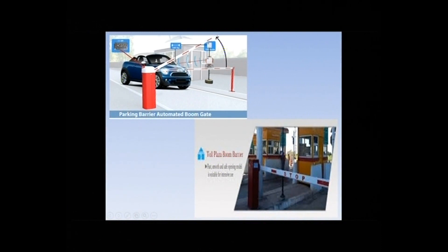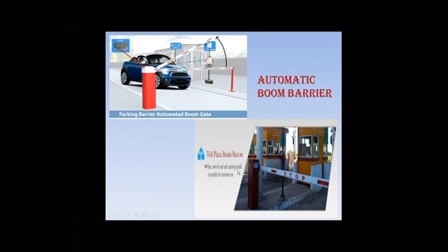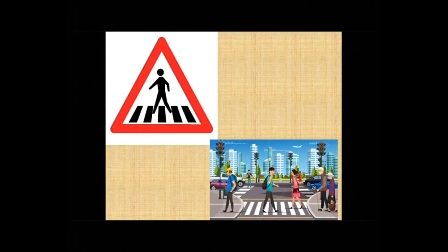This is called an automatic boom barrier. A barrier is a type of gate. Generally in India or Punjab you can have these at every tall plaza or in some parking areas. Now manless parking is everywhere — you take your own ticket, and if you don't pay, the boom barrier will stop you from getting out. It is getting automated, that's why it is called an automatic boom barrier. When you encounter this, you can say 'this is an automatic boom barrier.'